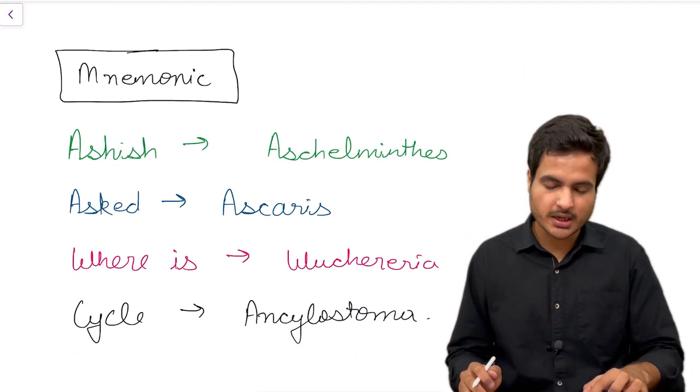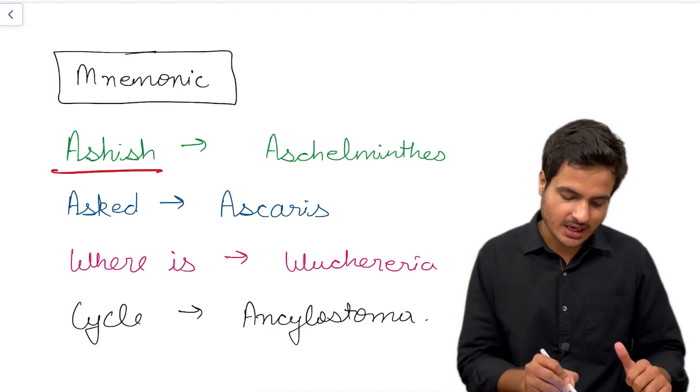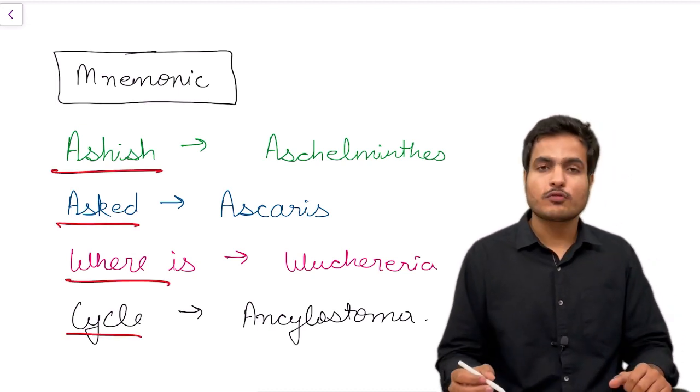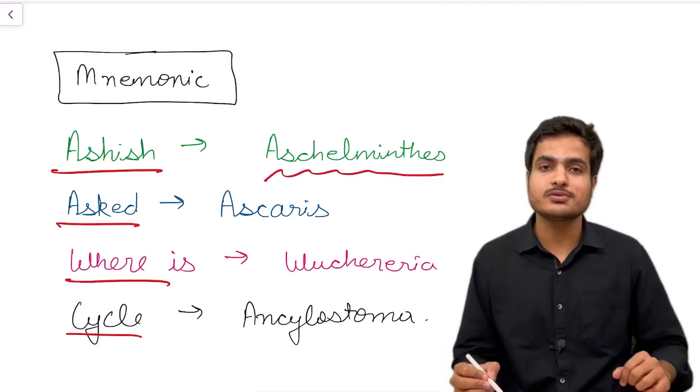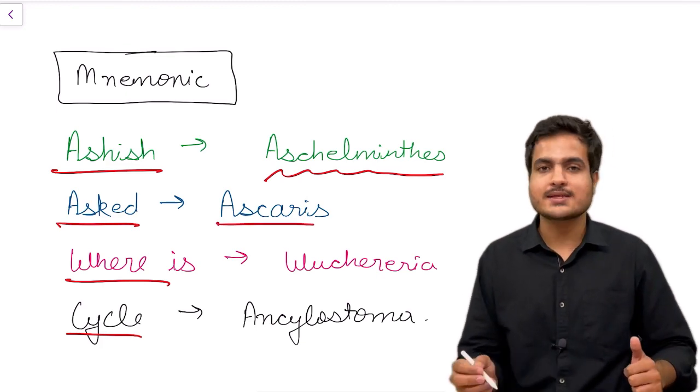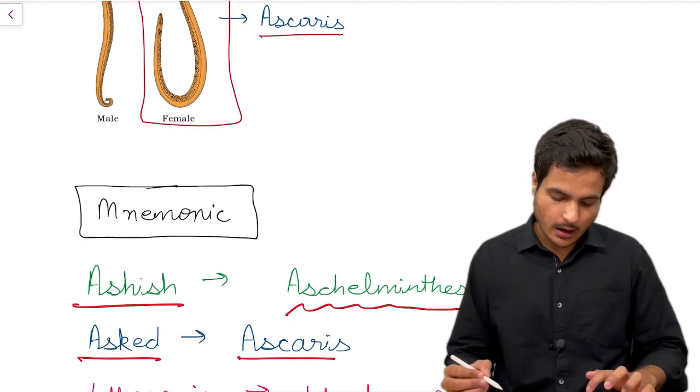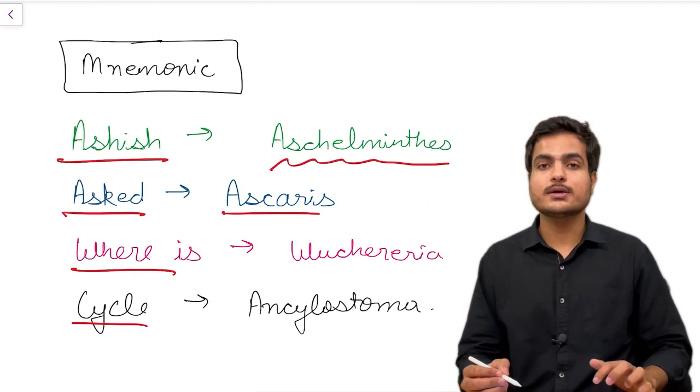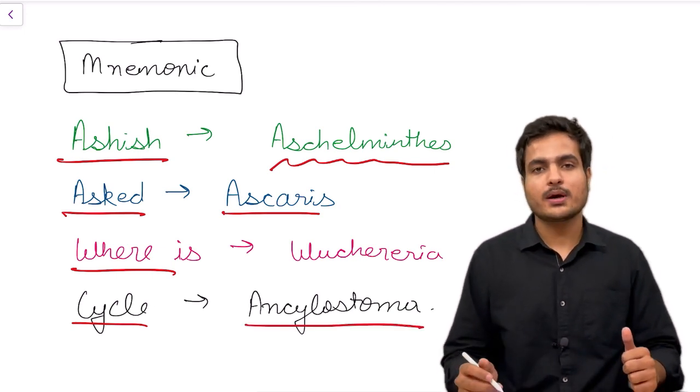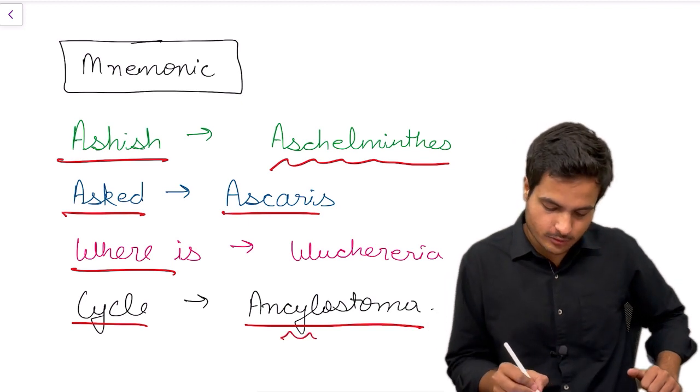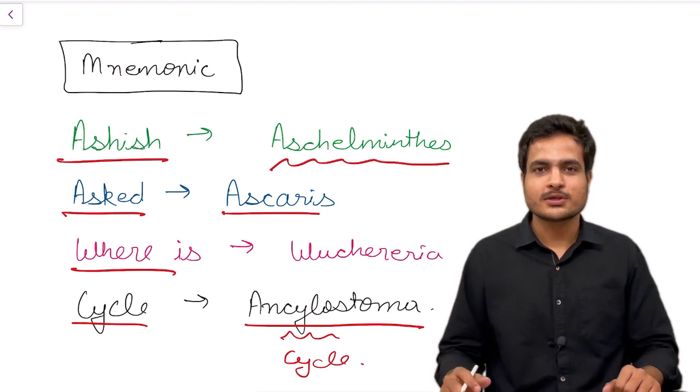Now let's talk about the mnemonic for learning these names. We can learn them by a mnemonic that says 'Ashish asked where is cycle.' From Ashish you could remember that we are talking about fifth phylum that is Aschelminthes or roundworms. 'Asked' you could learn that we are talking about Ascaris, that is the roundworm. From 'where' you could learn that we are talking about Wuchereria, that is filarial worm. And 'cycle' describes Ancylostoma, so from 'cycle' you could learn Ancylostoma is the hookworm.